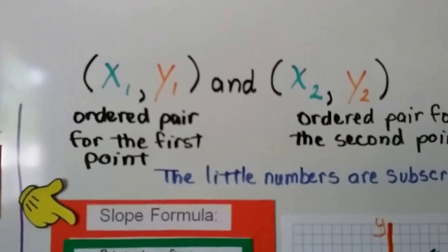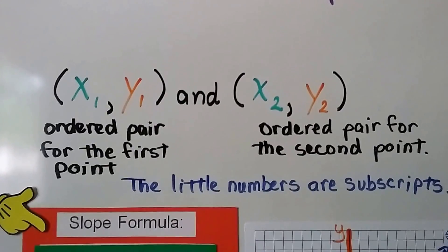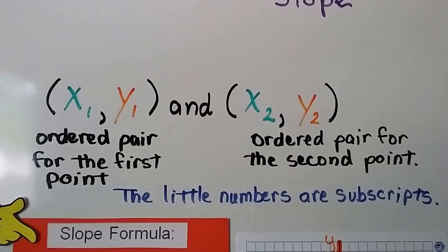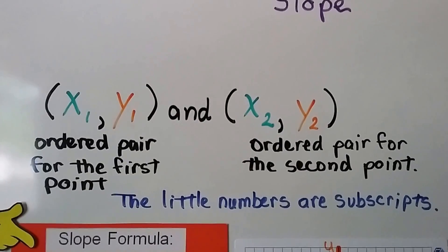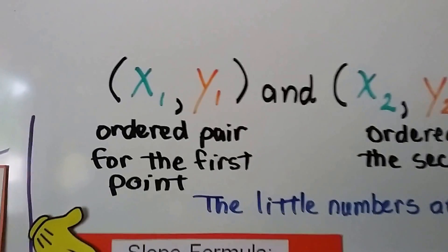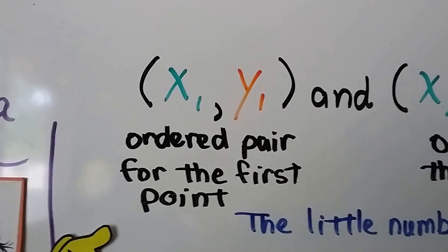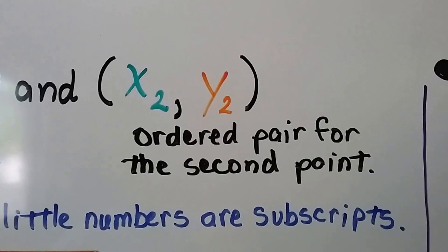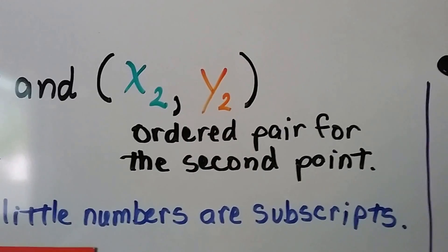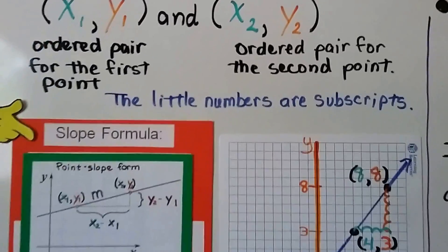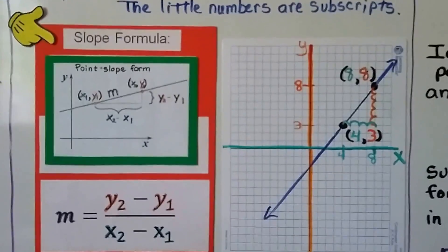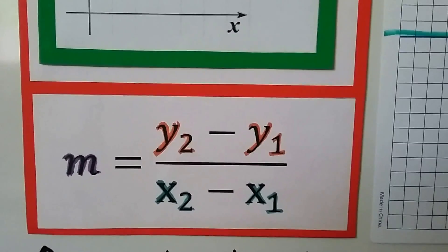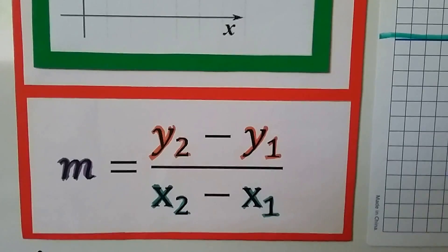So you heard me say sub 1 and sub 2. The little numbers to the bottom right of our x and y are called subscripts, and it tells us which one we're talking about. So x sub 1, y sub 1 tells us that's the ordered pair for the first point. x sub 2, y sub 2 tells us it's the ordered pair for the second point. It helps us identify which is which. And we're going to use the slope formula, this right here, and we're going to substitute in the numbers from our x and y values into this formula.